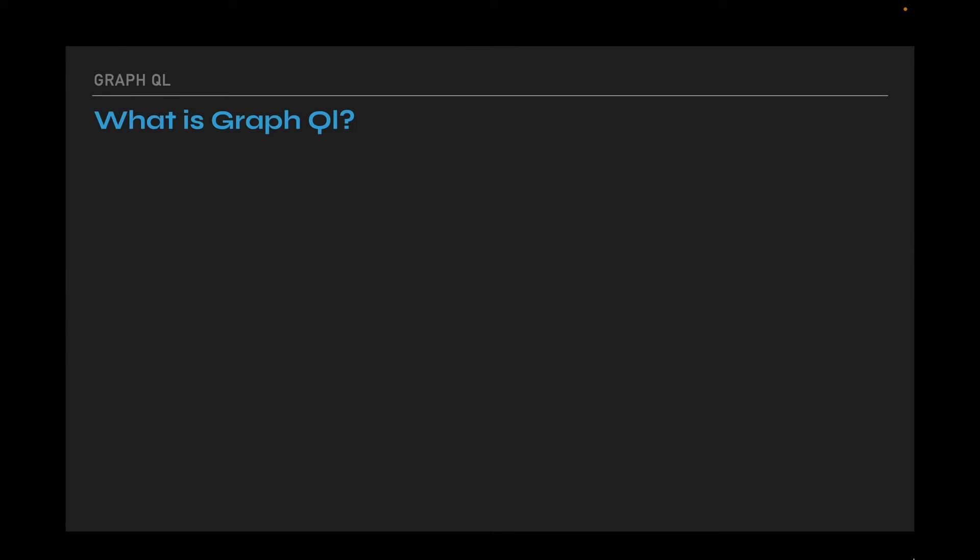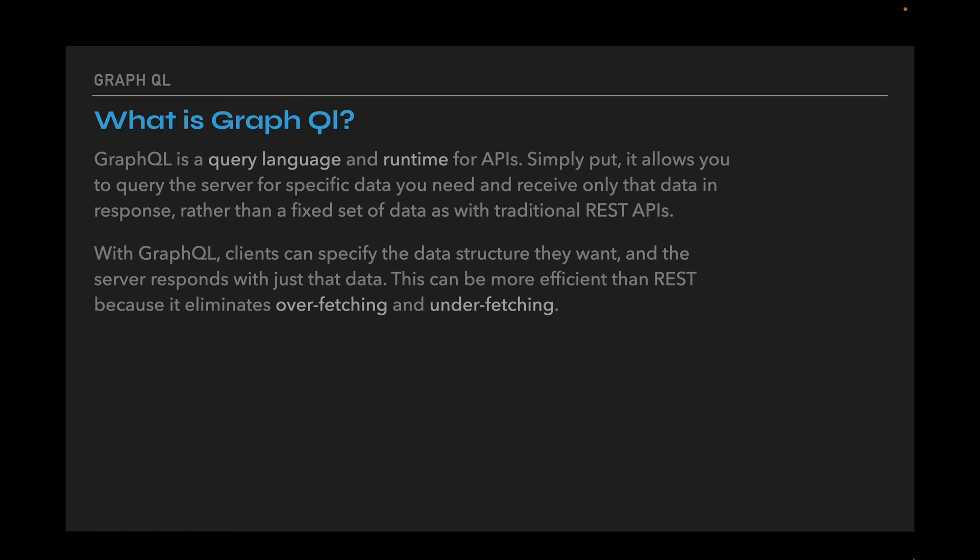What is GraphQL? GraphQL is a query language and runtime for APIs. Simply put, it allows you to query the server for specific data you need and receive only that data in response, rather than a fixed set of data as with the traditional REST approach. With GraphQL, clients can specify the data structure they want and the server responds with just that data. This can be more efficient than REST because it eliminates over- and under-fetching.